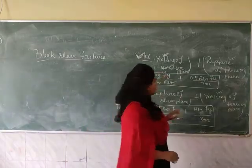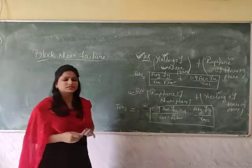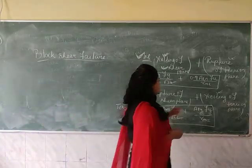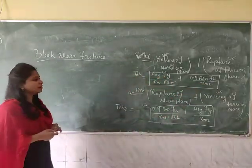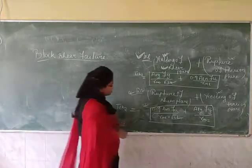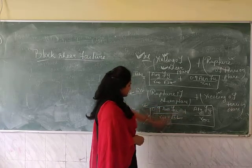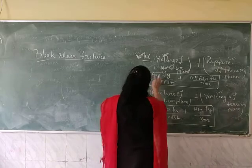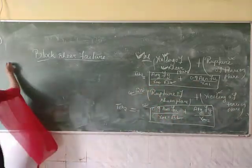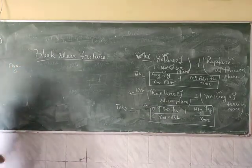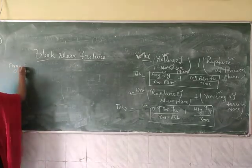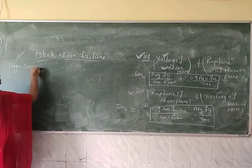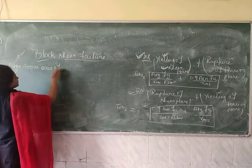γm0 is the partial factor of safety for failure at yield stress, with a value of 1.1 (from Table 5). γm1 is the partial factor of safety for failure at ultimate stress, with a value of 1.25. The new terms introduced are: Avg — the gross area of the shear plane, where 'v' stands for shear and 'g' stands for gross.